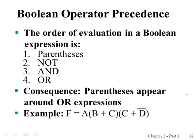We have basically three Boolean operators: NOT, AND, and OR. For the precedence issue, we have parentheses, which is not actually an operator but controls the precedence of operators. The order of evaluation is: parentheses first, then NOT, AND, and OR — that's the order.